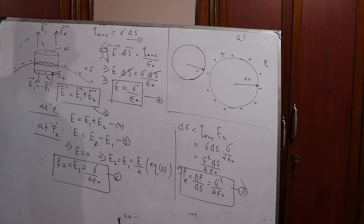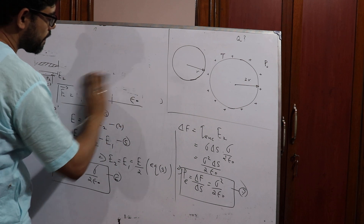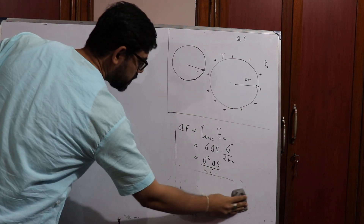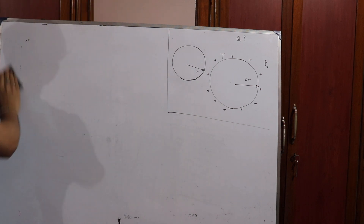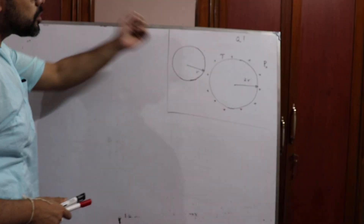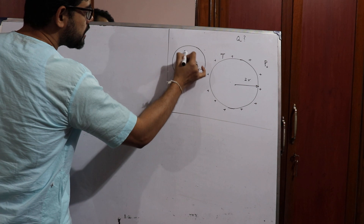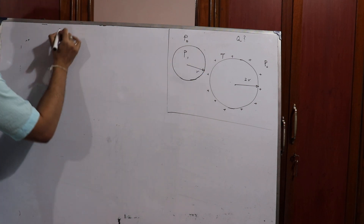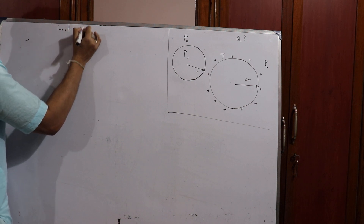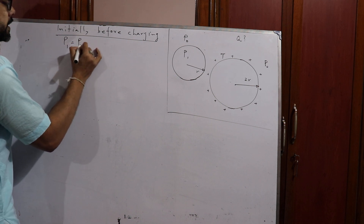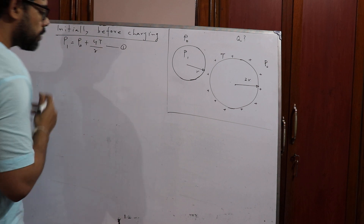Please take a screenshot of this core concept, and then we will proceed. Now, getting into the problem: a soap bubble has two surfaces. Initially, before charging, suppose the pressure inside the bubble is P1 and the outside atmospheric pressure is P0. We can write the initial equilibrium condition as P1 = P0 + 4T/r. I am calling this equation 1.